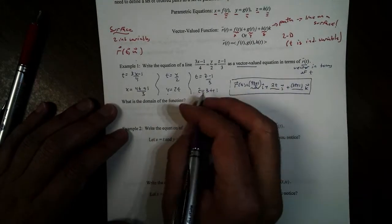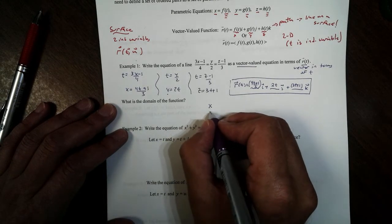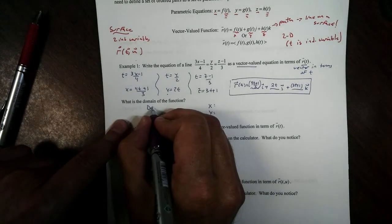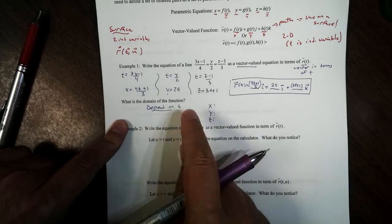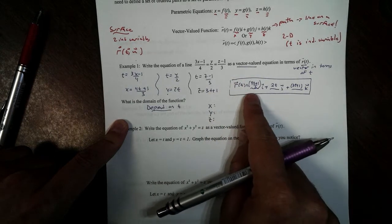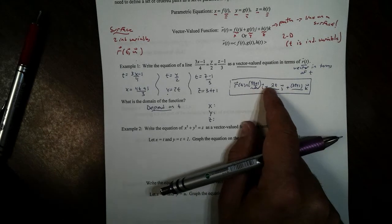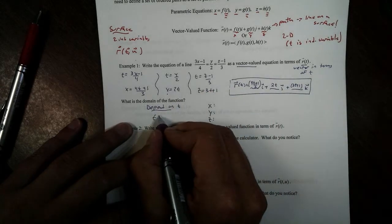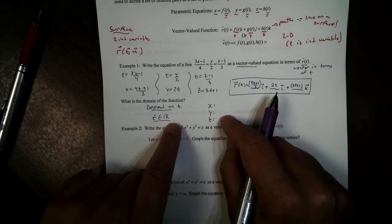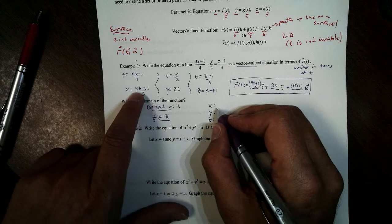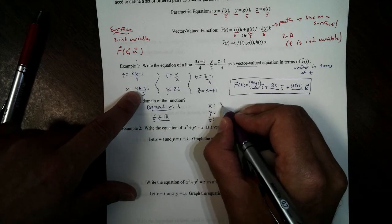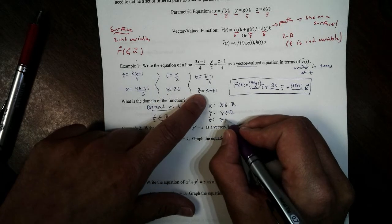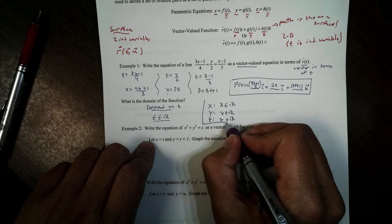Now we want to find the domain of the function — what's the domain for x, y, and z? All of these depend on t, so we look at t and check for any restrictions: are we dividing by zero, or risking square roots of a negative? We don't have any domain restrictions, so t can be any real number. Because t can be any real number, x, y, and z can each also be any real number.